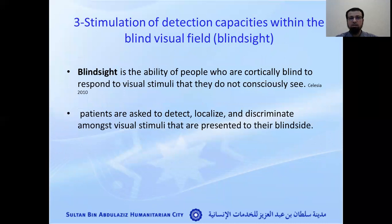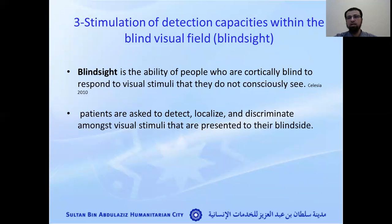One of the approaches is stimulation of detection capacities, also called blind sight. This is an interesting approach with some success stories. These patients did not lose all of their visual ability after brain injury because the injury is in the brain, not in the eye. The eye can still receive stimuli and send them to the brain. It was found that those patients retain some ability to detect, localize, and discriminate certain objects.